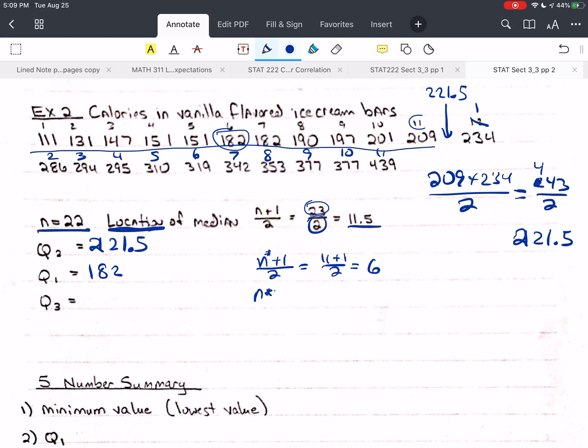Again, n star star is 11 plus 1 over 2. So 11 plus 1 over 2 is still 6. So 319, the sixth value, 319 is going to be Q3. Now, let's talk about the five-number summary.